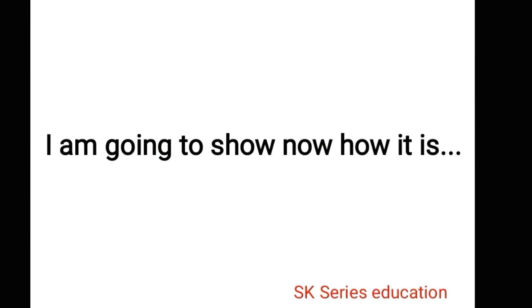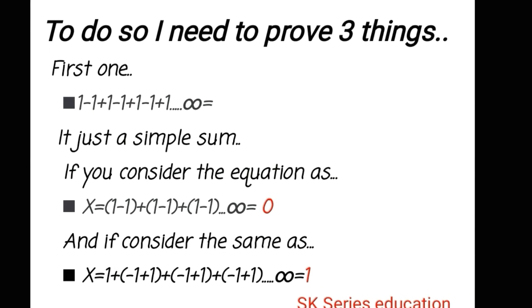I am going to show now how it is. To do so I need to prove three things. First one: 1 - 1 + 1 - 1 + 1 - 1... tends to infinity, and I am considering this equation as X. It's just a simple sum. If I consider this equation by putting brackets evenly, and if I consider